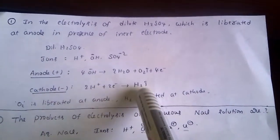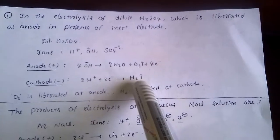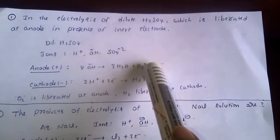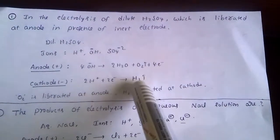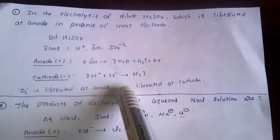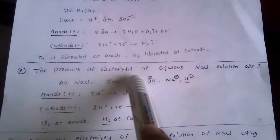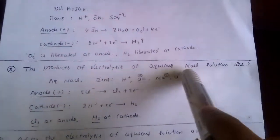At the cathode, only one positive ion is present: H⁺. So 2H⁺ + 2e⁻ gives rise to H₂. Therefore, oxygen gas is liberated at the anode and hydrogen gas is liberated at the cathode in the electrolysis of dilute H₂SO₄.